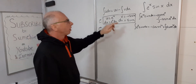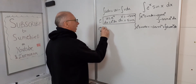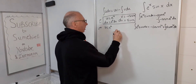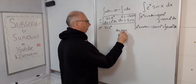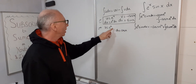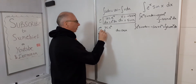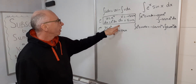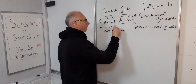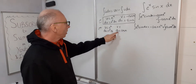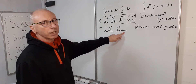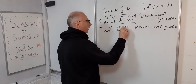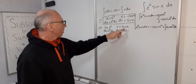So for the second integration by parts, we let u equal e^x again, and dv equal cosine(x). Now we need to find v and du. du will be the same as before — e^x dx. For v, we integrate cosine(x), and the integral of cosine(x) is sine(x). So now we have all the pieces.